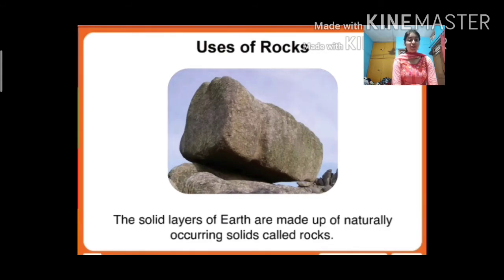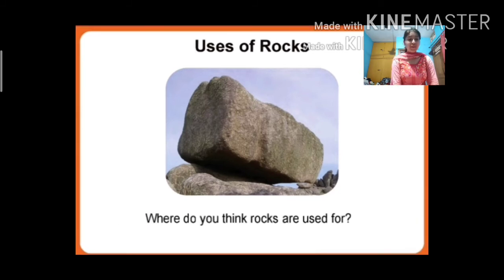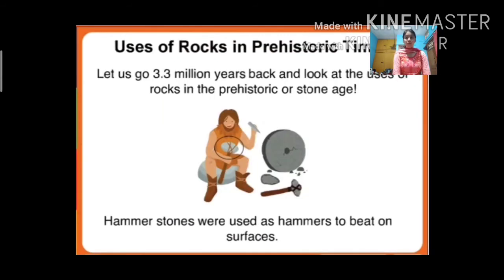Now we will learn about uses of rocks. What is a rock? The solid layers of earth are made up of naturally occurring solids called rocks. Humans can't make rocks, and it takes millions of years to form rocks. Where do you think rocks are used? Let's see. In prehistoric times — let us go 3.3 million years back and look at uses of rocks in the stone age.